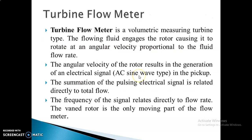This is a volumetric measuring turbine type. It engages the rotor, causing it to rotate at an angular velocity proportional to the fluid flow rate. The angular velocity of the rotor results in generation of an electrical signal. The output signal is AC, picked up by the pickup coil. The summation of the pulsing electrical signal is related directly to the total flow, and the frequency of the signal relates directly to the flow rate.